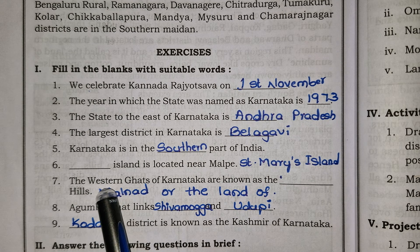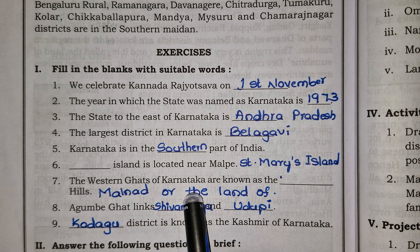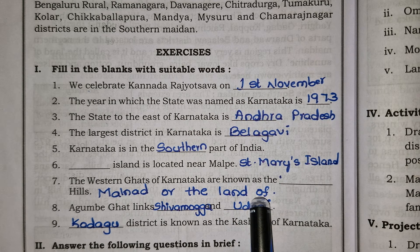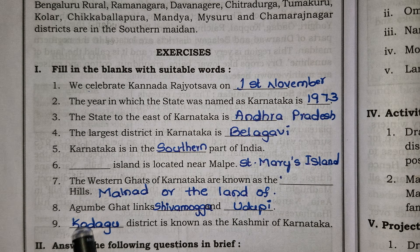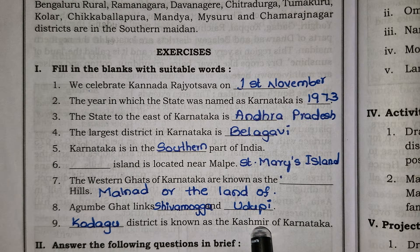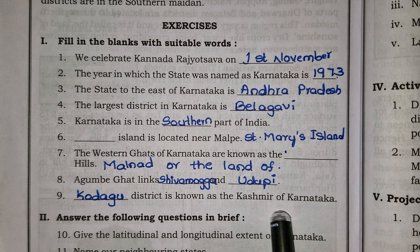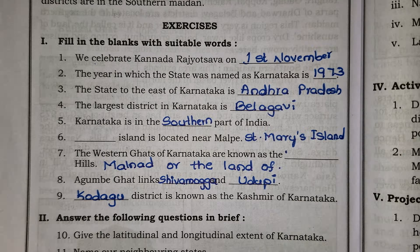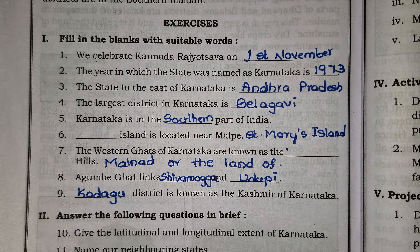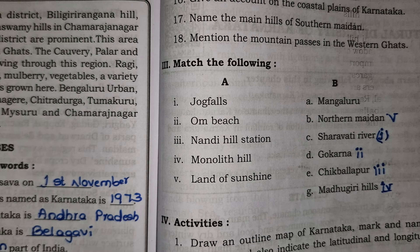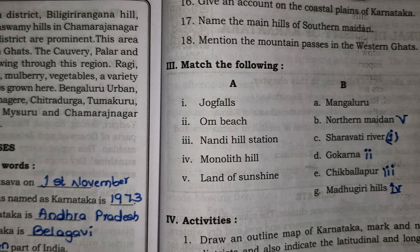Saint Mary's Island is located near Malpe. The Western Ghats of Karnataka are known as the Malnad, or the land of hills. Agumbe Ghat links Shivamogga and Udupi. Kodagu district is known as the Kashmir of Karnataka.